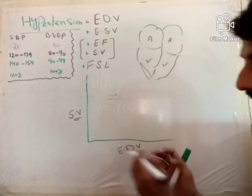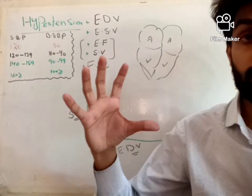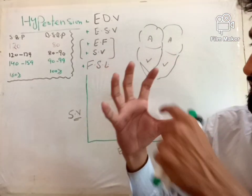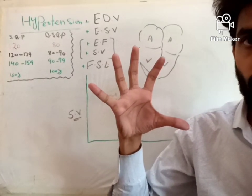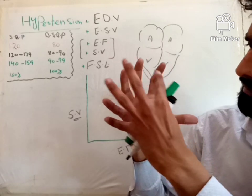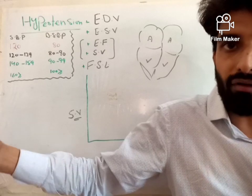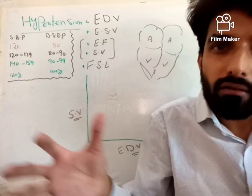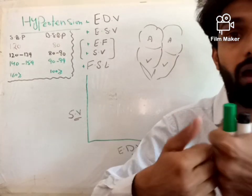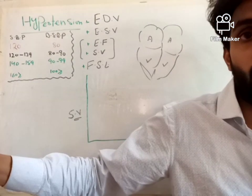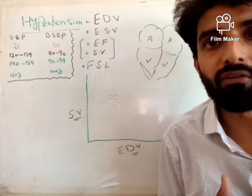Similarly, when end diastolic volume is high — meaning at the end of relaxation, if more blood is present in the heart — the ventricle has been stretched more. When the ventricle muscle has been stretched more, obviously when it's time to contract, it will contract more powerfully. Because the cardiac muscles have been stretched more, they will come back to their original position with more power.